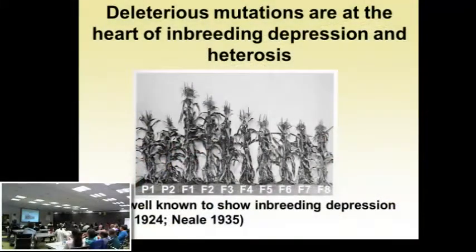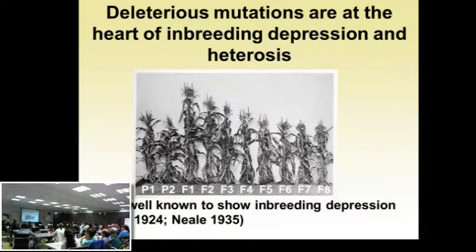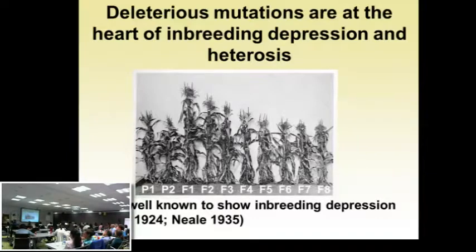Let's end up on where are the bad mutations. Deleterious mutations are really at the heart of inbreeding depression and heterosis. People such as Jones and Neal saw this nearly a hundred years ago — that you inbreed a line and it looks like crap. It took a lot of years for people to make inbred lines that were good, and they were purging deleterious mutations in order to do so. I think the people almost a hundred years ago had it pretty much right as to what the general basis is.